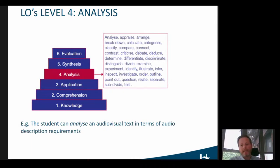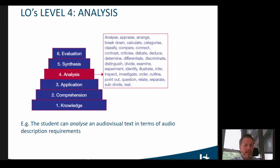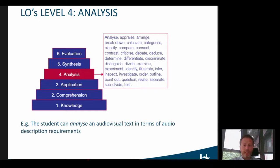The fourth level, analysis, means you are able to break down all the knowledge and information into different components and look at the interrelationships between them. For example, the student can analyze an audiovisual text in terms of requirements for AD — so they have a sound knowledge of multimodality, know how the different sign systems and meaning-making systems interact, so that they know what additional information a blind or partially sighted person needs.